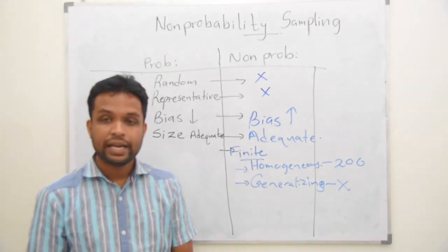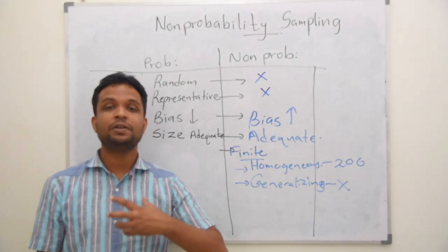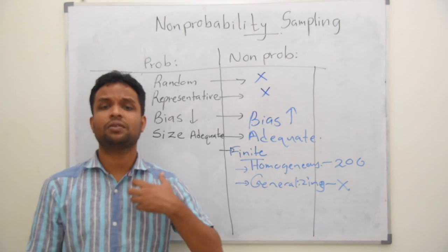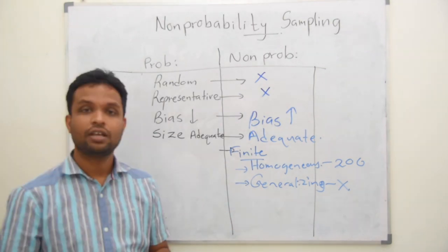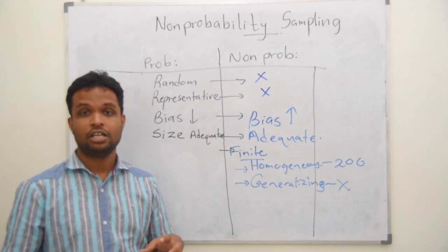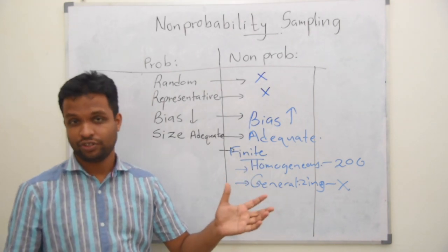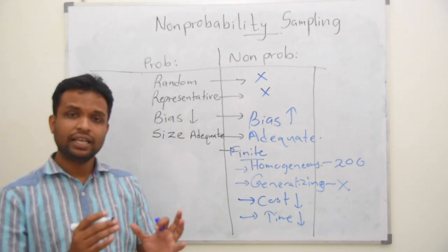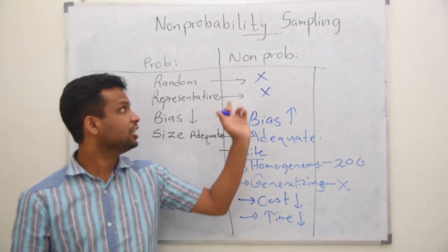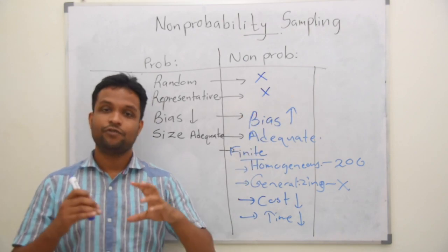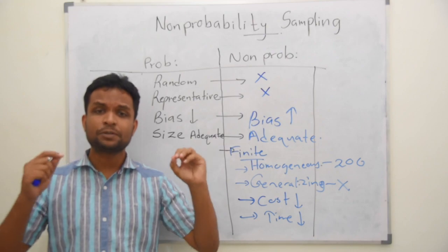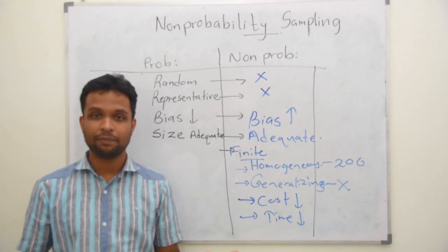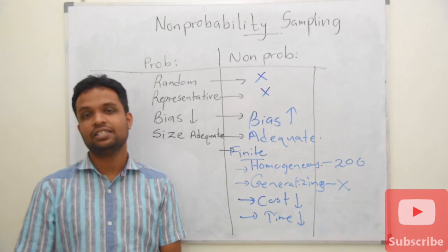And additionally, we will get different benefits because of non-probability sampling. If you do not have adequate money to conduct this research, we can go for non-probability sampling, but we will not be able to generalize your findings. Cost will be minimal and the time will be less. So, there are so many other advantages even using non-probability sampling, but we can't generalize our findings. But in special circumstances, we may be able to generalize our findings. But most of the time, we will not be able to generalize our findings.